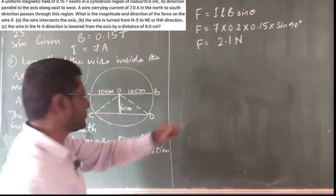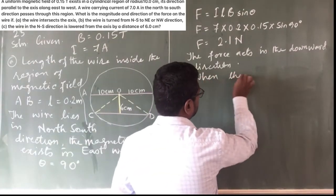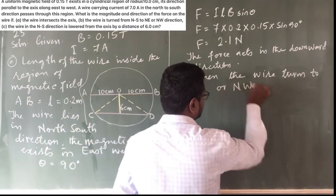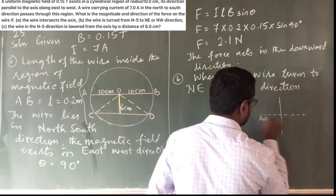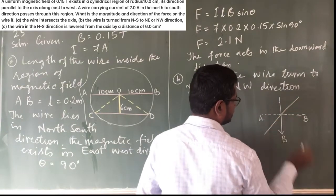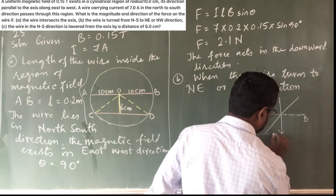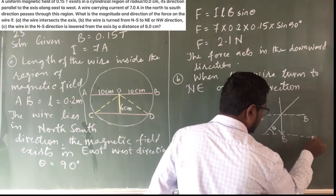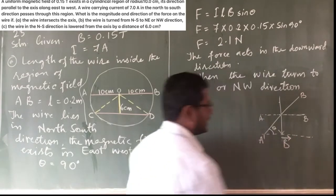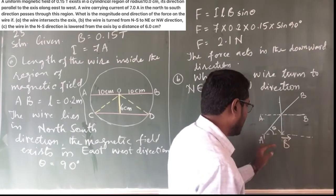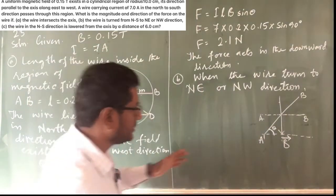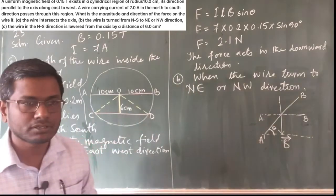For Part B, the wire turns to the north-east or north-west direction. The original wire AB was in the north-south direction. Now the new wire A'B' makes some angle theta with the direction of the magnetic field. We need the new length A'B'. Since the chord length AB is the opposite side and A'B' is the hypotenuse of the right-angle triangle formed, we get: sinθ = AB / A'B', so A'B' = AB / sinθ. Let L' = L / sinθ.